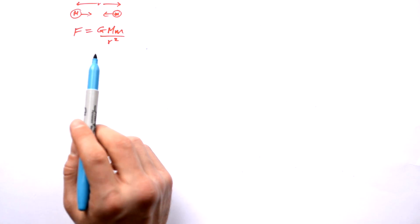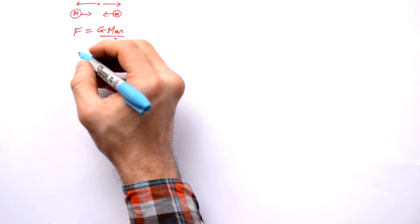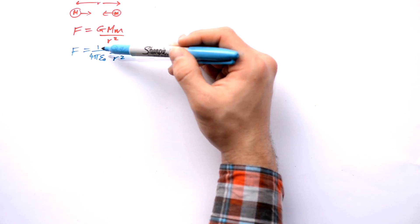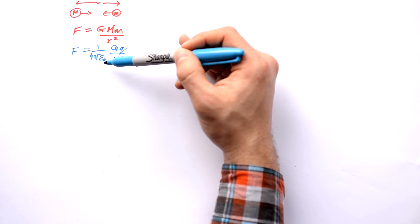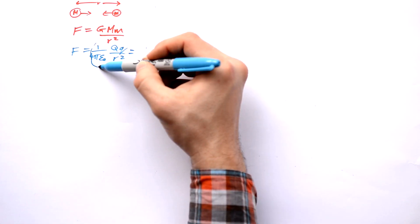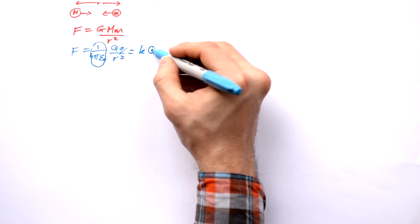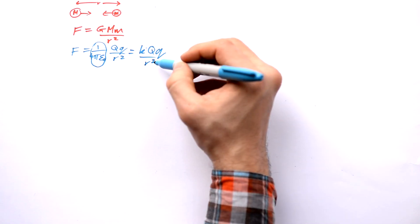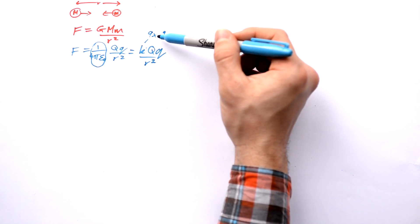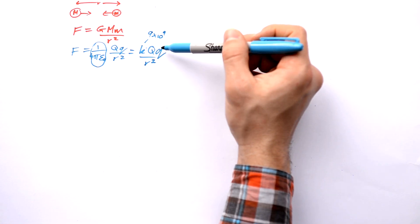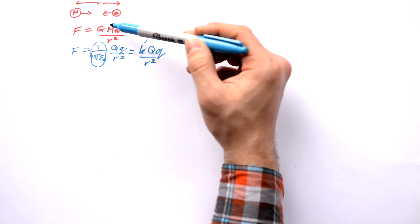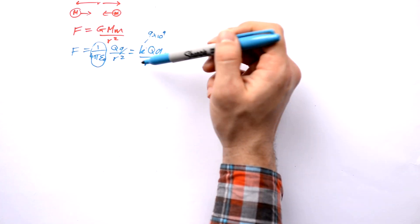Newton's gravitational constant is in your formula sheet. What about if we had two charges instead? It's very similar. Instead of the gravitational constant we have one over four pi epsilon zero, epsilon zero being the permittivity of free space — it's just a constant. Because this whole thing is a constant, we can rewrite this as just K Q Q over r squared, where K ends up being nine times ten to the nine. So you can just put in nine times ten to the nine, multiply by the two charges, and divide by the separation squared.